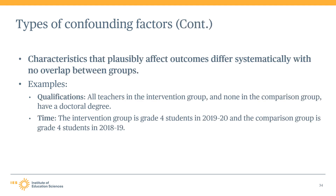Another type of confounding factor occurs when the characteristics of study units in the intervention group differ from those in the comparison group with no overlap. For this type, the characteristic must plausibly affect outcomes. One example is teacher qualifications — if all teachers in the intervention group have a doctoral degree and no teachers in the comparison group have a doctoral degree, it is possible that something learned in doctoral programs contributed to the observed impacts rather than the intervention itself.